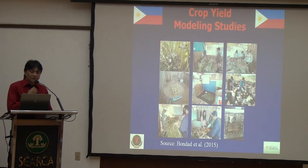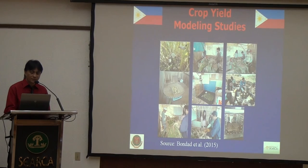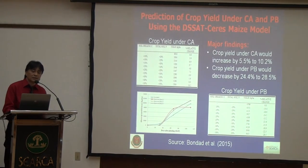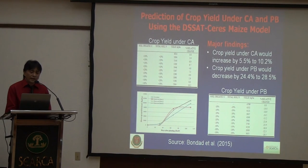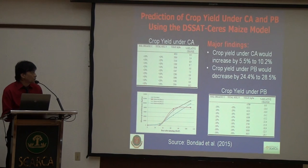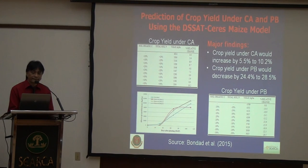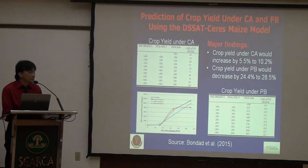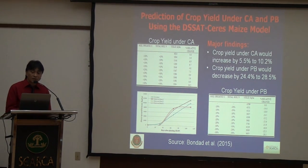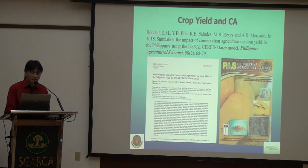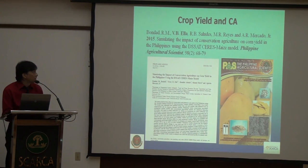Aside from soil quality studies, we also did crop yield modeling studies. We collected plant and soil samples through multiple growing seasons and did modeling using the DSSAT crop model. Our major findings showed that crop yield under CA would increase by about 10% under CA, but under plow-based systems, crop yield would decrease by as much as close to 30% after 10 years of continuous implementation. That publication came out in a journal in 2014.